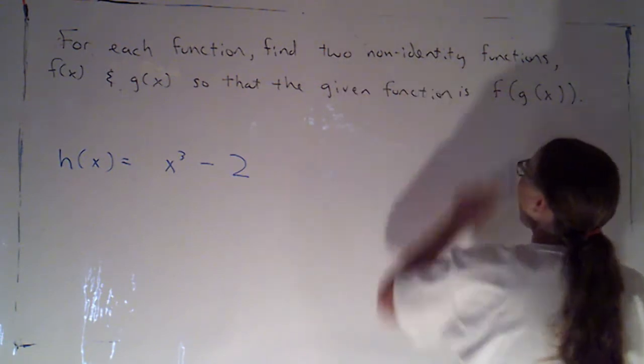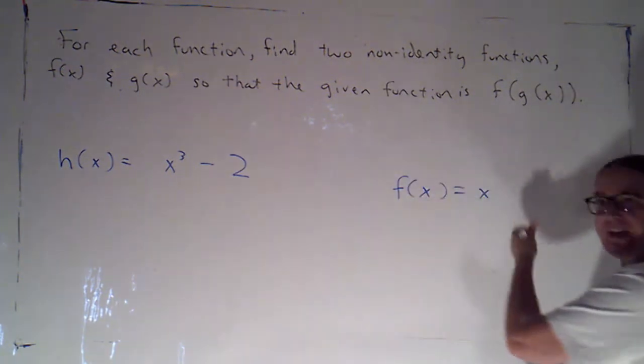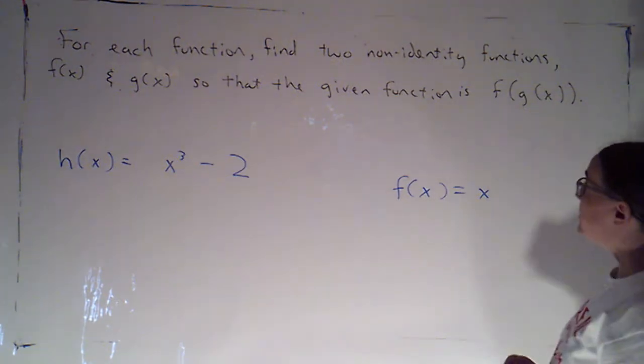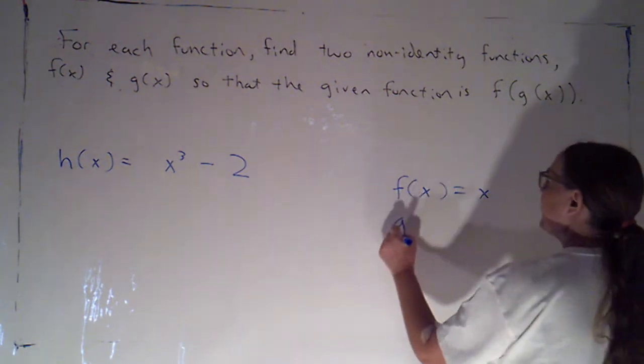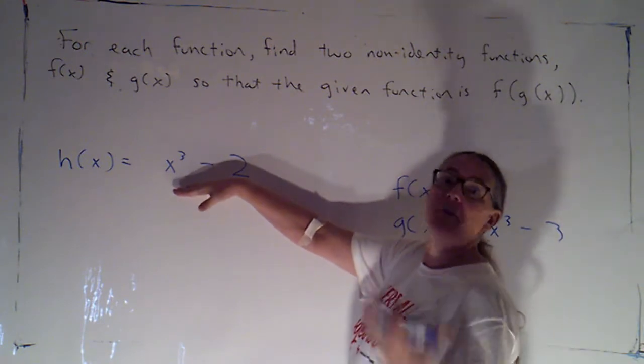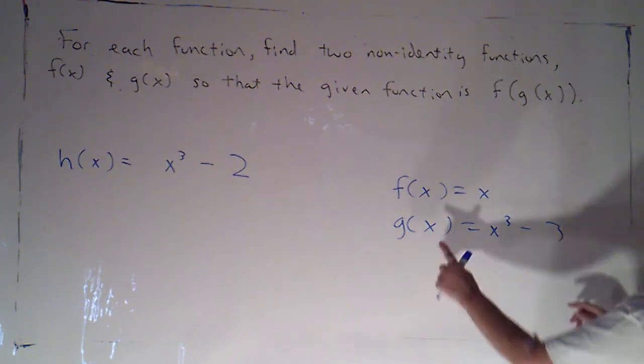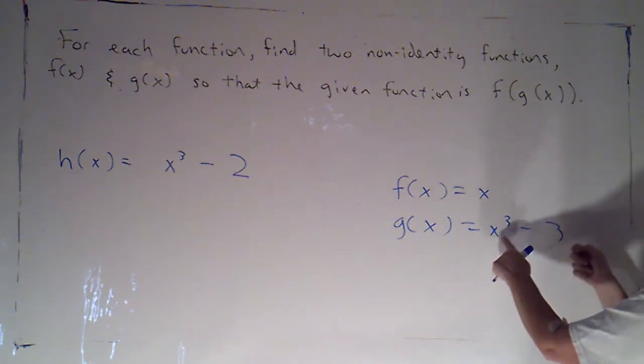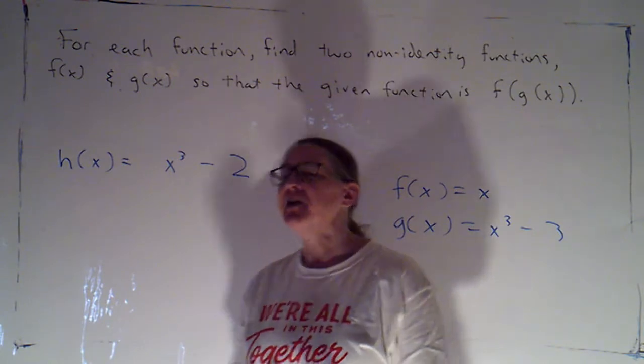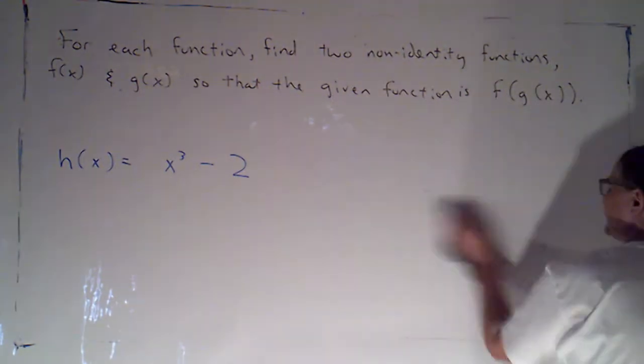I specify to find two non-identity functions. Remember, the identity function is f equals x. That's the function where you plug something in and you get it right back out. If I used f being the identity function, then I could just let g of x be x cubed minus 2. I could just copy this function and compose it with the identity function. So, essentially, those directions say don't take the cheap way out.